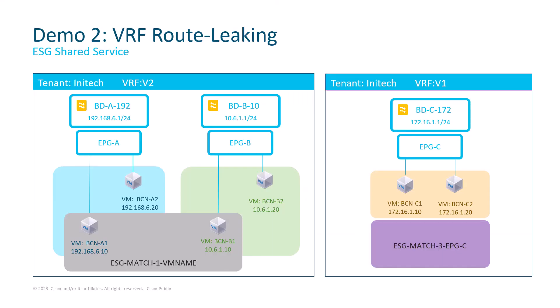For today's demo I will use a setup from the previous video. As a reminder, let me do a quick recap. In our tenant Initec, we have two VRFs with different bridge domains and associated EPGs. Last time we created a couple of ESGs on top of this setup. From the left, we created ESG match 1 VM name in VRF2, where we group A1 and B1 virtual machines together even though they are served by different BDs, using the VMM endpoint policy tag. In VRF1, we use an EPG selector to match all endpoints residing in EPG-C to an ESG group named ESG match 3 EPG-C.